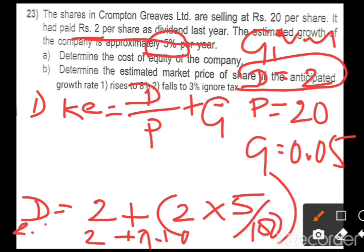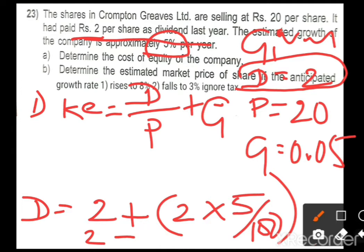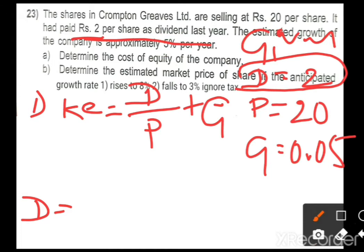Therefore, the dividend D = 2.10 rupees. If the dividend were given as the current year dividend, there would be no need to add 5 percent. In this case, since it is the last year dividend, we add 5 percent to find the current year dividend, giving us 2.10.